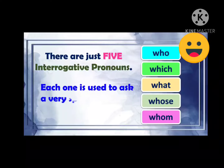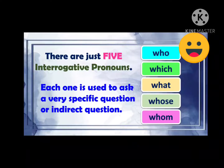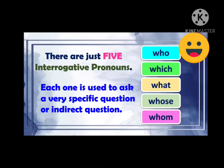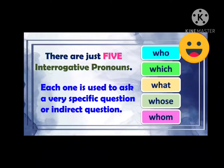So remember, each one is used to ask a very specific question or indirect question. The five interrogative pronouns are who, which, what, whose, and whom. They are very different from the other pronouns that we have spoken about until now. Now that we know what they are, let us find out and see how they work.